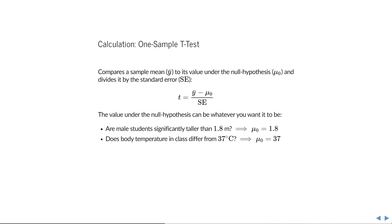The one-sample t-test compares a sample mean to its value under the null hypothesis and then divides it by the standard error. The value under the null hypothesis can be whatever you want it to be. So if we want to know whether men are significantly taller than 1.8 meters, then mu0 is 1.8. And if we want to know whether body temperature in a class differs from 37 degrees Celsius on average, then mu0 is 37.